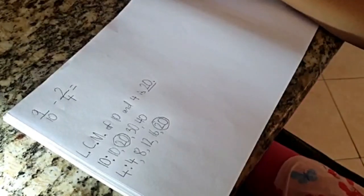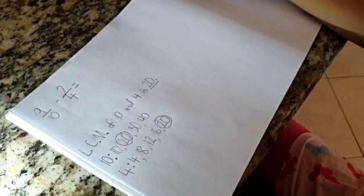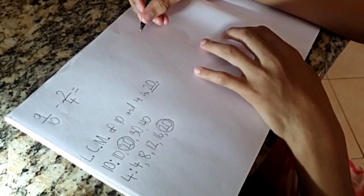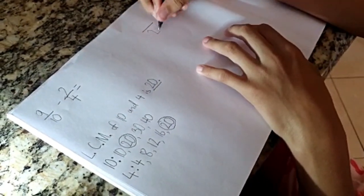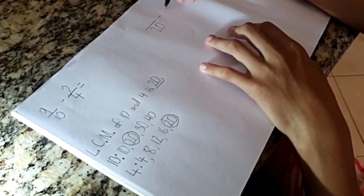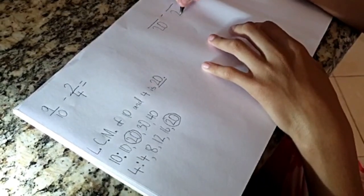We are now going to rewrite the fractions using the new denominator. So, over 20 minus over 20.